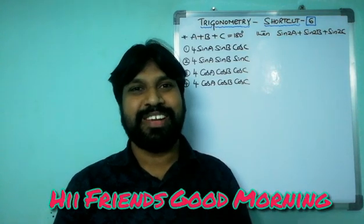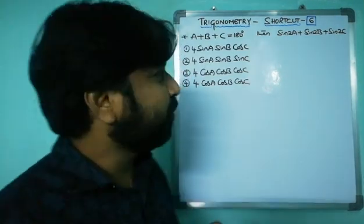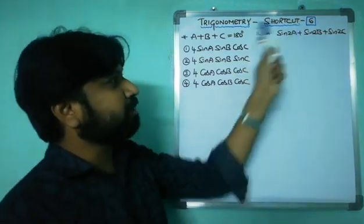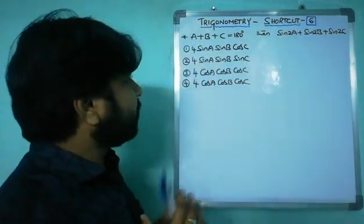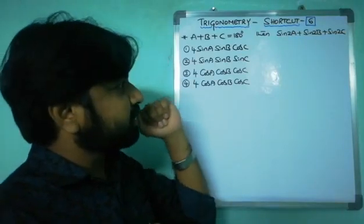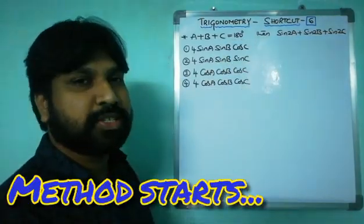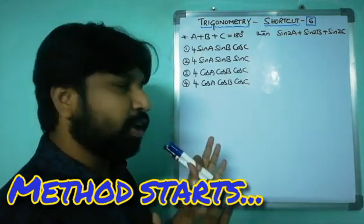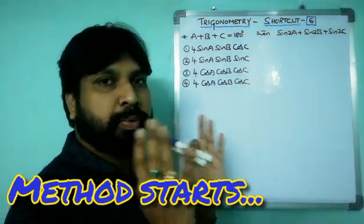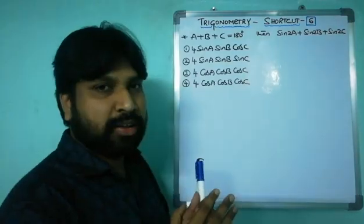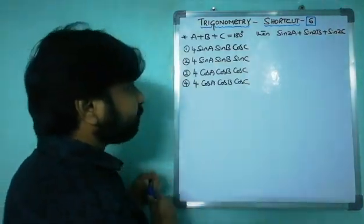Hi friends, good morning, welcome to my channel Palumaster. Today I'm going to discuss shortcut number six on trigonometry. If A plus B plus C equals 180 degrees, then what is sine 2A plus sine 2B plus sine 2C? This kind of lengthy question you can do very easily using this superb shortcut. First I want to show the method, then I'll reveal the shortcut.